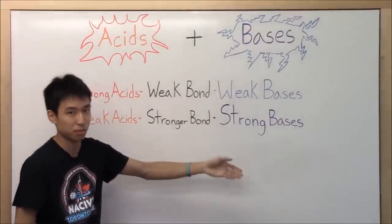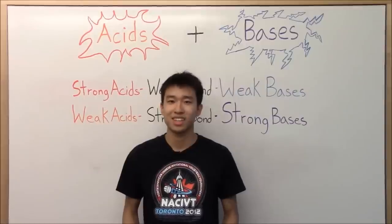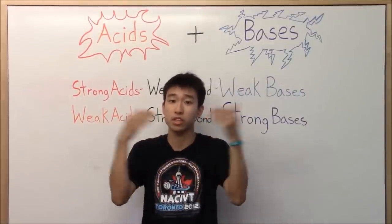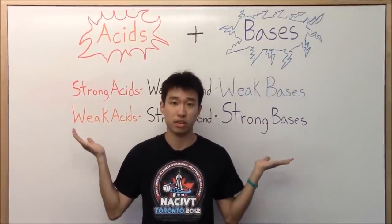So that's why strong bases become weak acids and strong acids become weak bases. So as you guys can see, there's basically a converse or opposite relationship between acid strength and base strength.